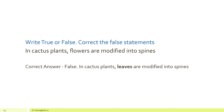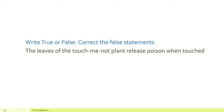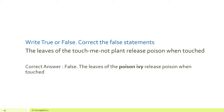That statement is false — in cactus plants, leaves are modified into spines. Next: the leaves of the touch-me-not plant release poison when touched — this is a false statement. The correct version is: the leaves of the poison ivy release poison when touched.